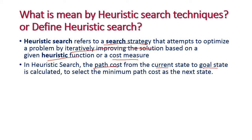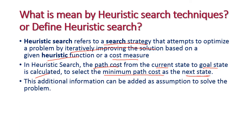In heuristic search, the path cost from the current state to the goal state is calculated. They may give an assumed cost — an imaginary cost value from the current state to goal state. By using that imaginary value we can select the minimum path cost as the next state. This additional assumed value of current state to goal state can be added as an assumption to solve the problem.